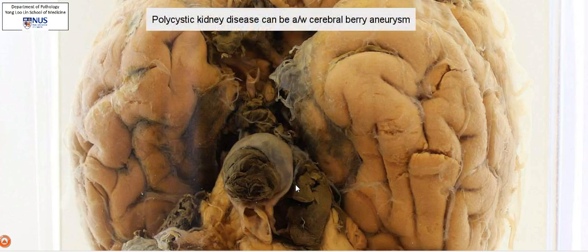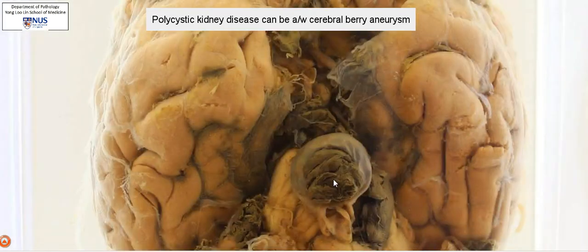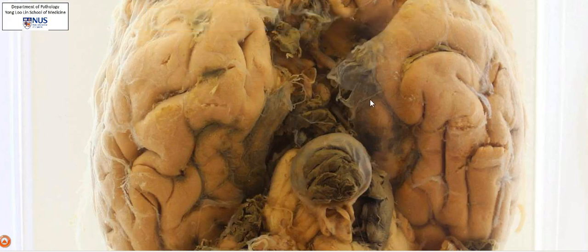Occasionally this may be associated with polycystic kidney disease. So in such patients, cerebral imaging would be a useful test to do, to see whether these patients have underlying berry aneurysms. If you recall, these would potentially give rise to raised intracranial pressure because of bleeding within the subarachnoid space.